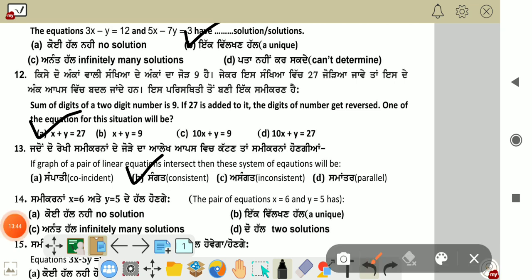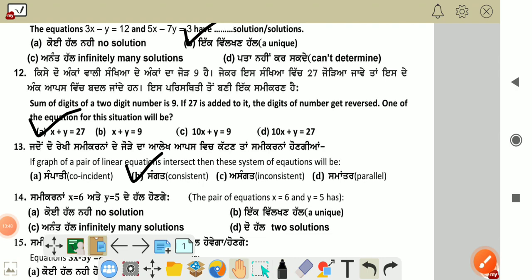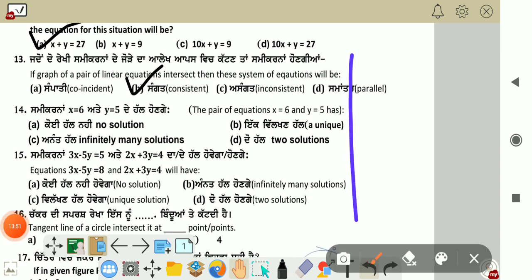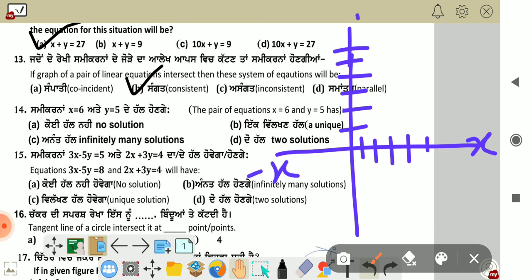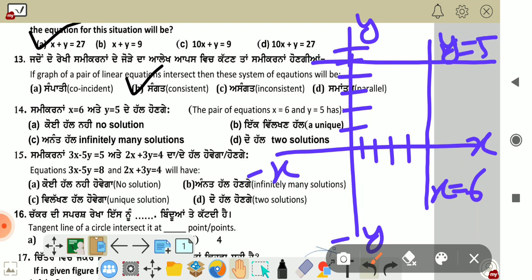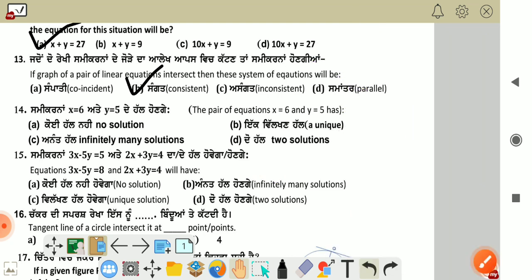The pair of equations x equals 6 and y equals 5 will have. See, x equals 6 is a vertical line and y equals 5 is a horizontal line. They intersect at one point (6,5). So they have one solution. Because they are intersecting at one point. So our answer is B option.